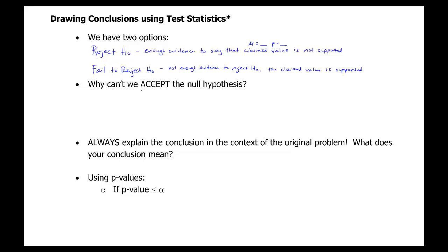You'll notice that there's nothing about 'accept' in those two options. We either reject or fail to reject. We don't say that we accept the null hypothesis, because 'accept' sounds like you proved something. And we never really say that we prove anything when we do a statistical test.